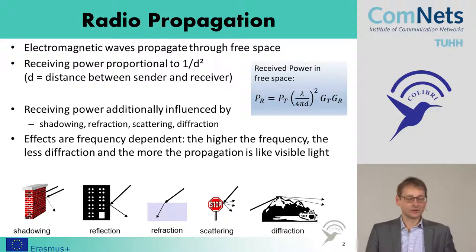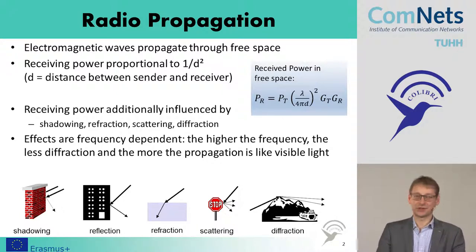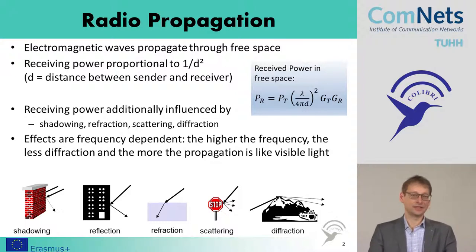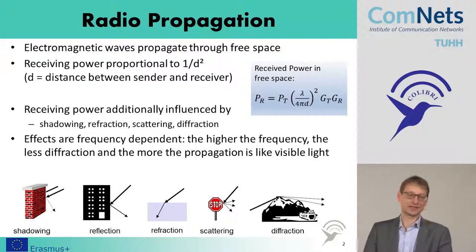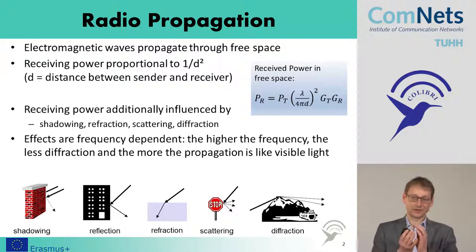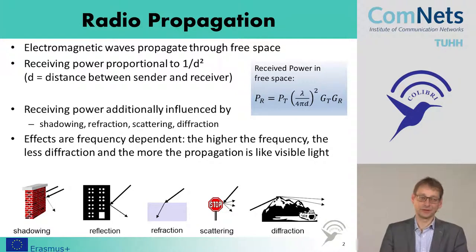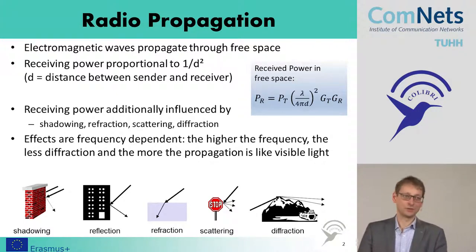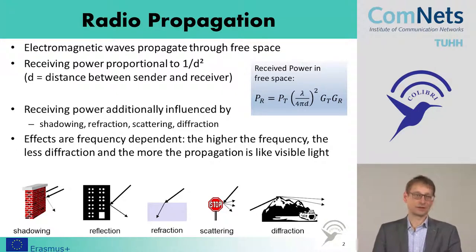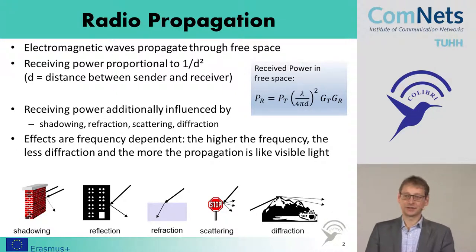If you talk about radio propagation, we can start with a simple model where we have a transmitter with an antenna transmitting in all directions with the same power, and we have one receiver with nothing in the environment — no reflections, no transmissions through obstacles. Even in this ideal case, if we radiate power from this antenna in all directions equally, we basically have a sphere, and the power is distributed over the surface of that sphere. The surface of the sphere increases with the square of the distance, which means the power density decreases with the square of the distance. That is the first problem: we have a strong decrease of power over distance.